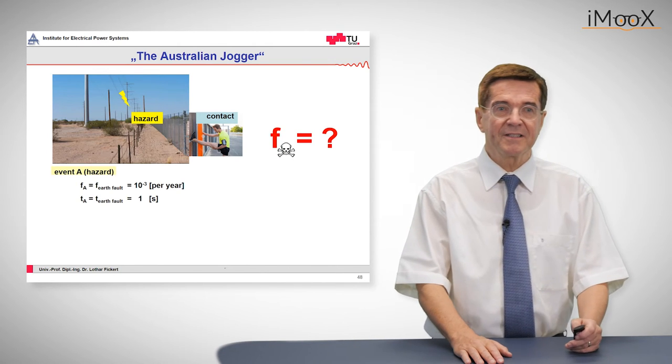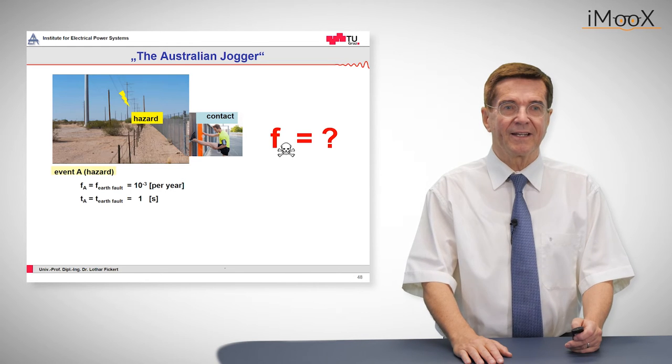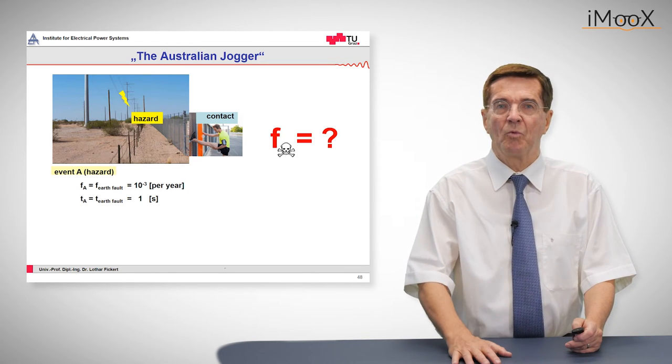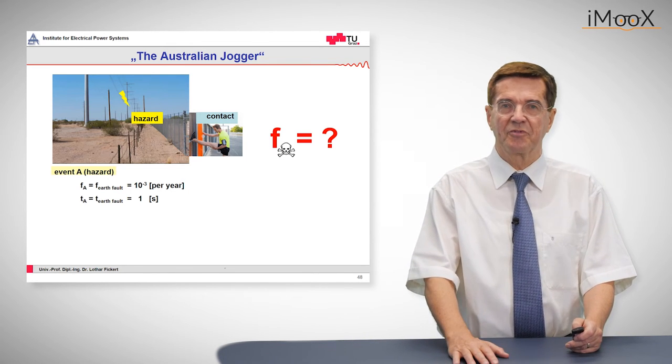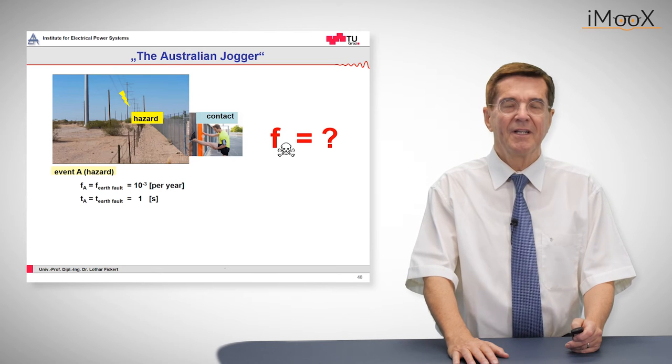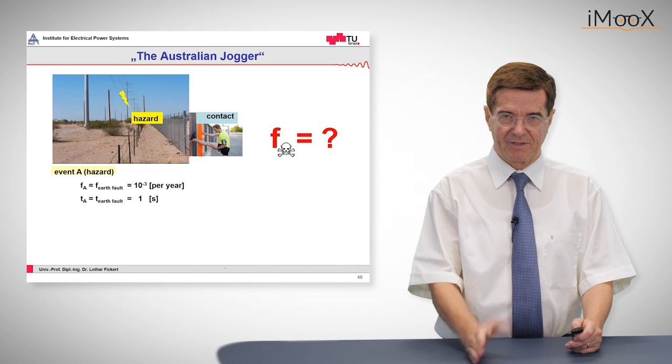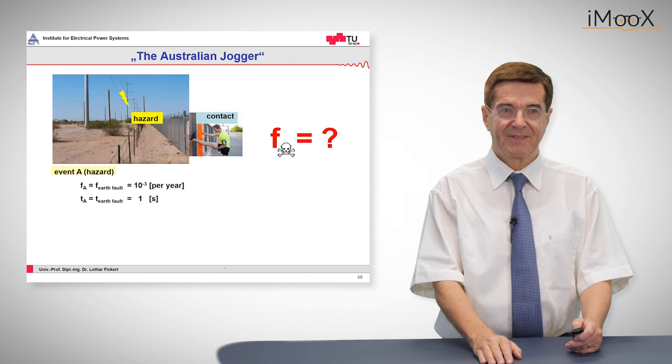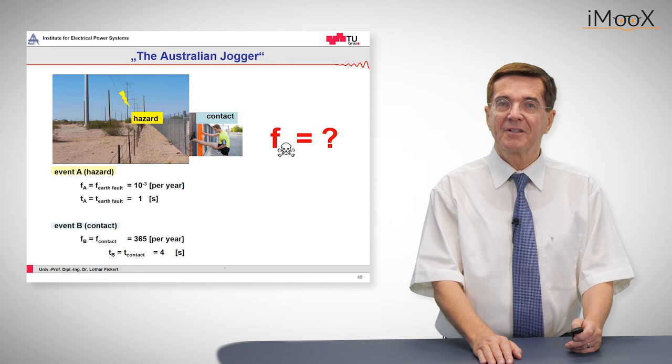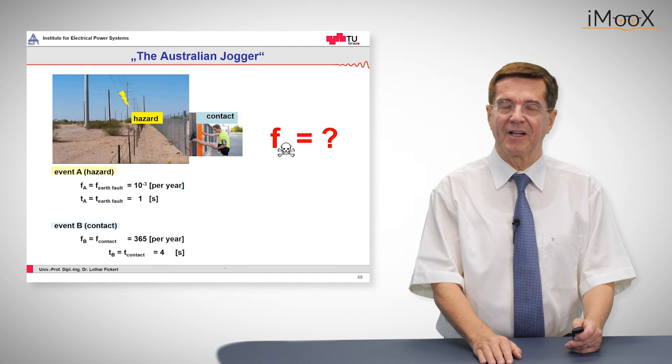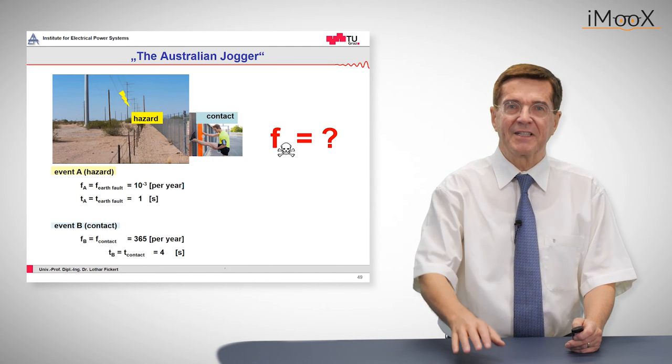So now in terms, in figures, the event A, the hazard, occurs every 1,000 years. This is proven by statistics for example. And it lasts for 1 second. After this 1 second protection trips out. The jogger comes by 365 days per year and is in touch with this fence for 4 seconds.